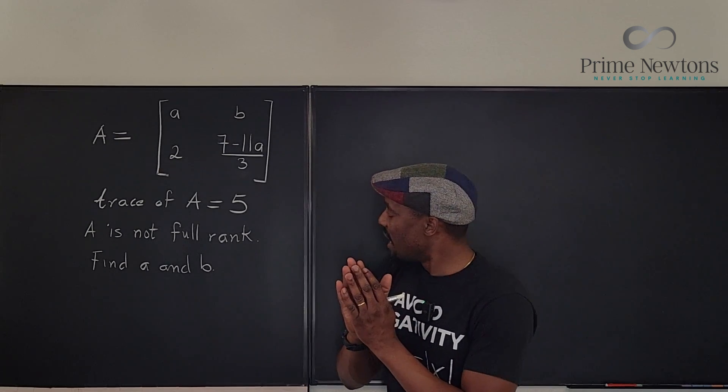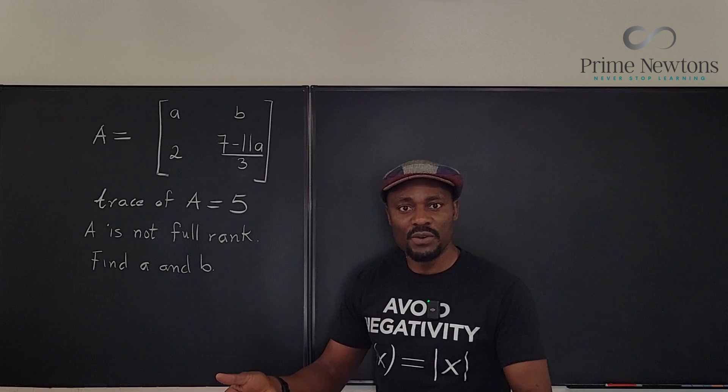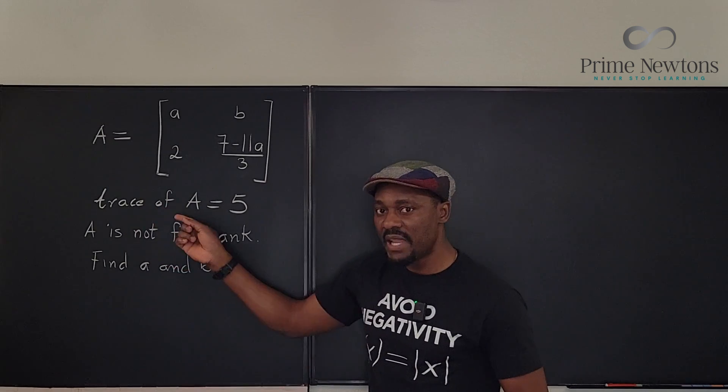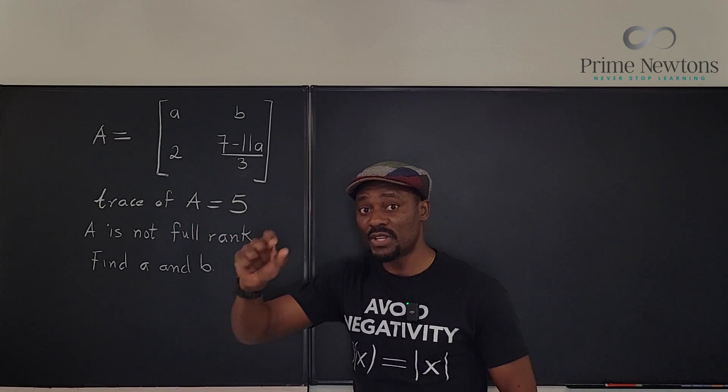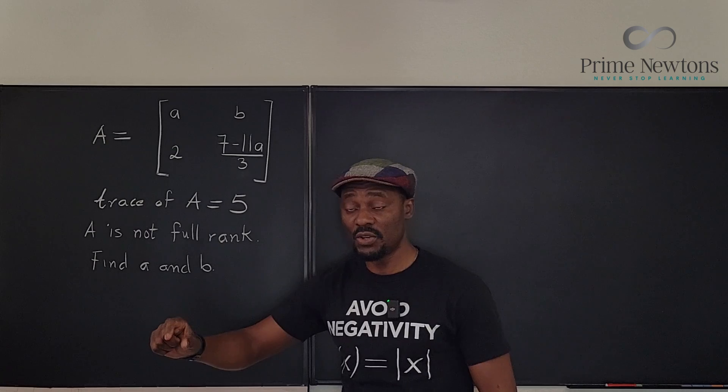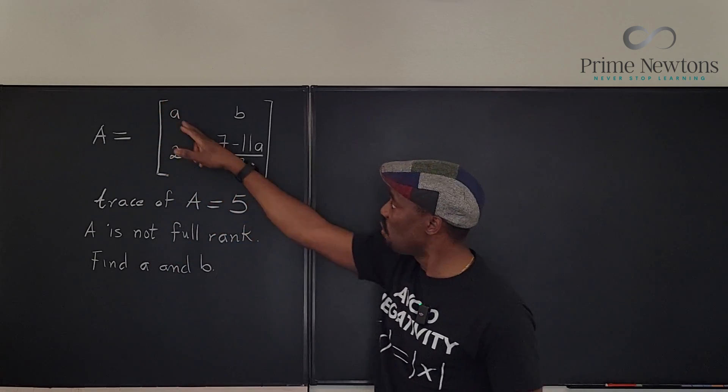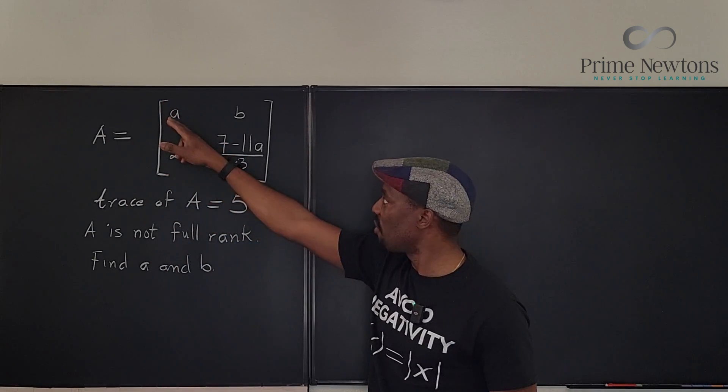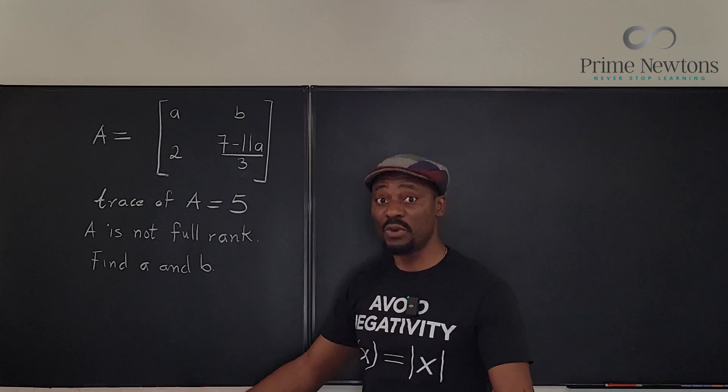So let's start with the first one. The trace of a matrix is the sum of the entries on the main diagonal. So if you look at the main diagonal, which is the one that starts here, just go all the way down here. If you add up all the numbers here, you've got your trace.